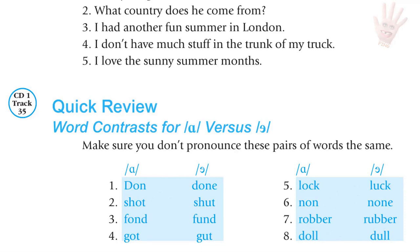Quick review — vowel contrasts for Ah and Uh: both/done, shot/shut, fond/fund, got/gut, lock/luck, non/none, robber/rubber, doll/dull.